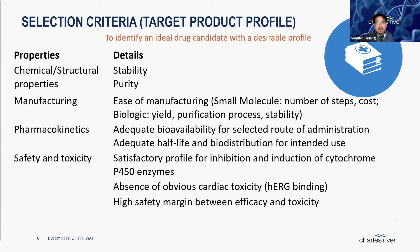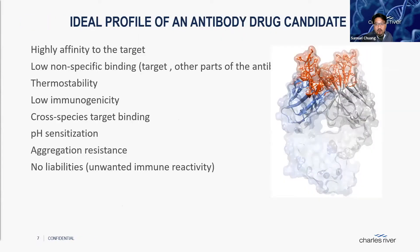When we think about small molecules, this is a small table of some of the key properties that one should be looking at to understand the different attributes that a small molecule should have in order to be successfully developed into the market. For other drug classes like monoclonal antibodies, they have different criteria. With other entities of different classes — it could be oligonucleotides, gene therapies — these criteria change. So it's really important to understand what are those characteristics that are important for an ideal candidate to have for development.